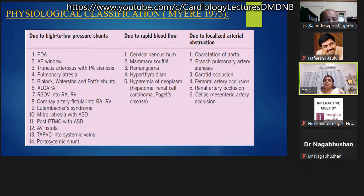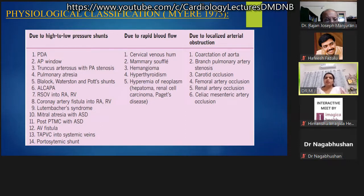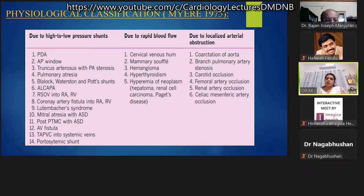Per Meyer's classification, continuous murmurs are broadly classified into those caused by flow from high pressure to low pressure zones — such as PDA, AP window, truncus arteriosus with pulmonary stenosis, pulmonary atresia with collaterals, BT shunts, Waterston shunts, ALCAPA, RSOV to RA or RV, coronary cameral fistulas, Lutenbacher syndrome, mitral atresia with ASD, post-PTMC with ASD — and combined AVI plus TAPVC into systemic veins and portosystemic shunts.